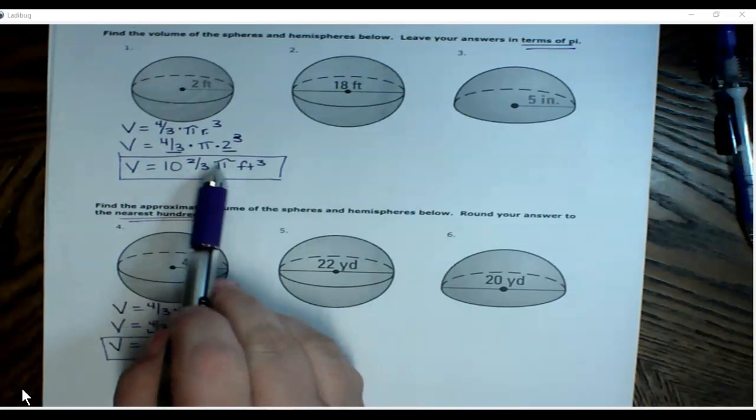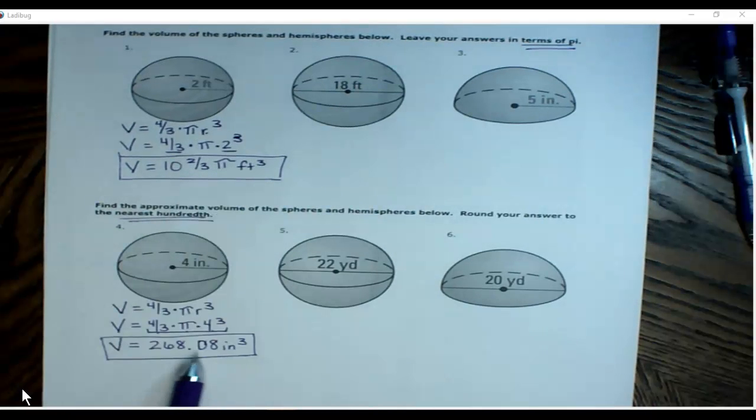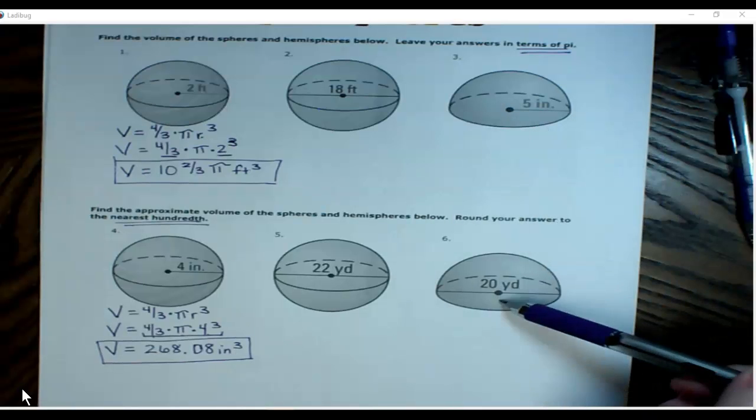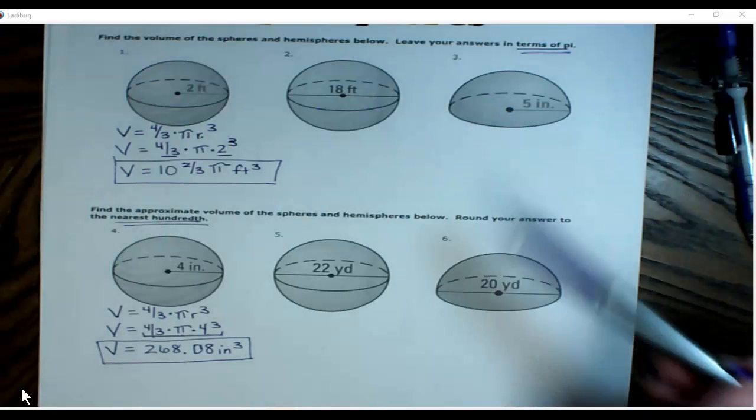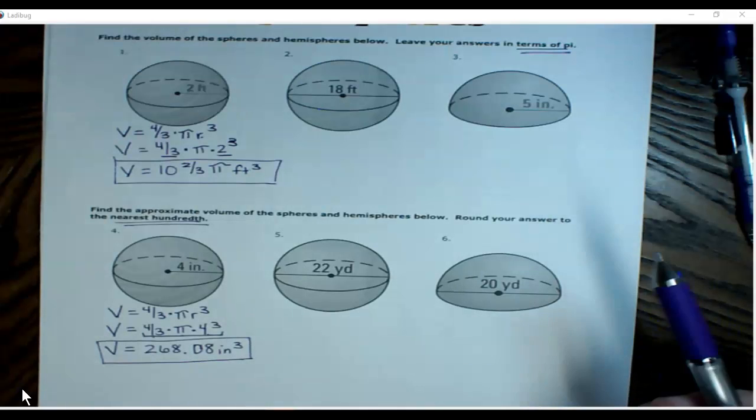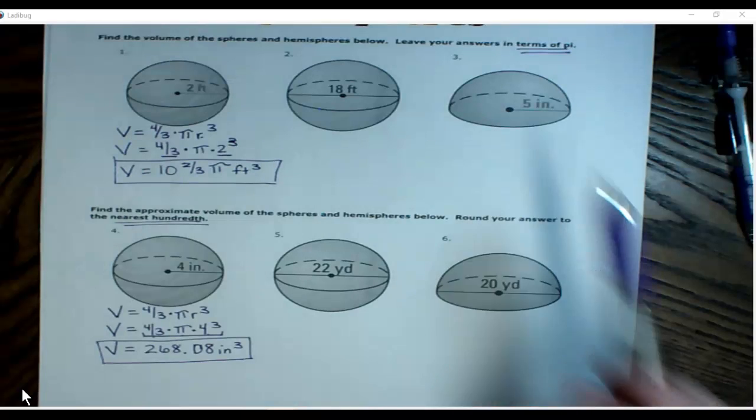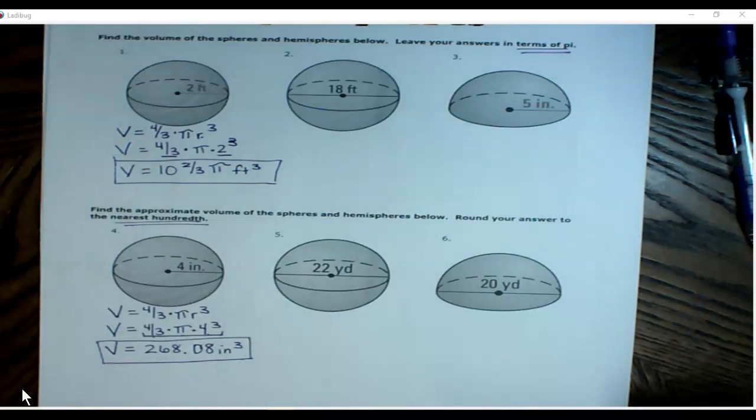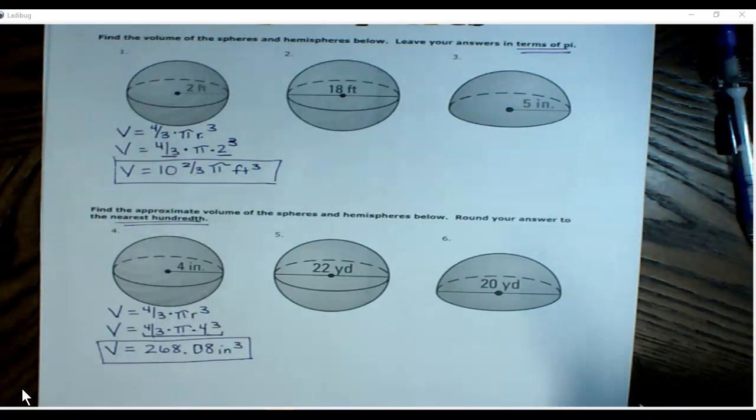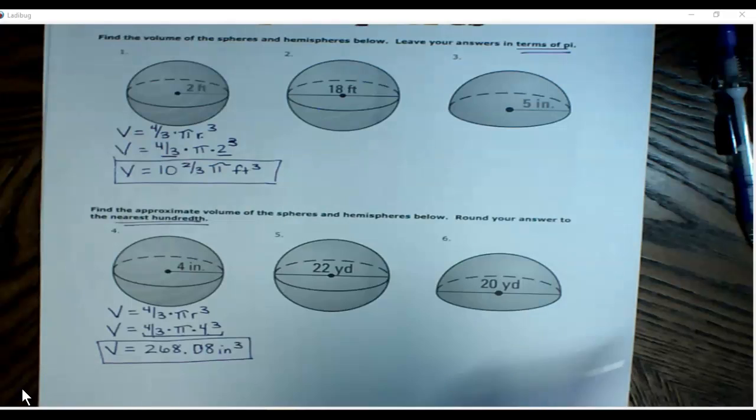So answer in terms of pi, answer rounded to the nearest hundredth, which is two decimal places. What do you notice about three and six? Hopefully you notice that it's only a half circle, or half a sphere, a hemisphere. How could I find the volume of that? Yes, I could find the volume of the complete sphere, and then take that answer and divide it by two when you're all done. All right, hope these help.